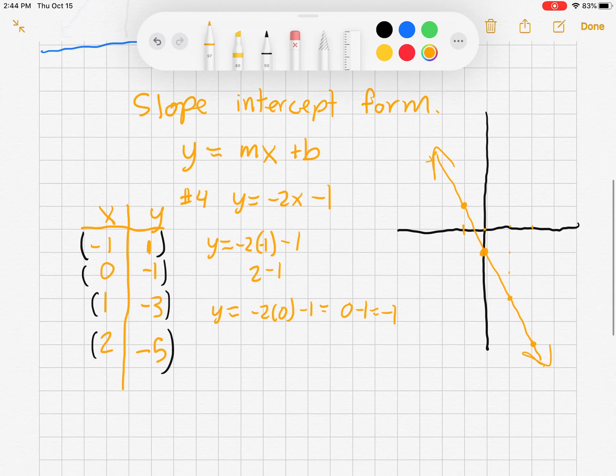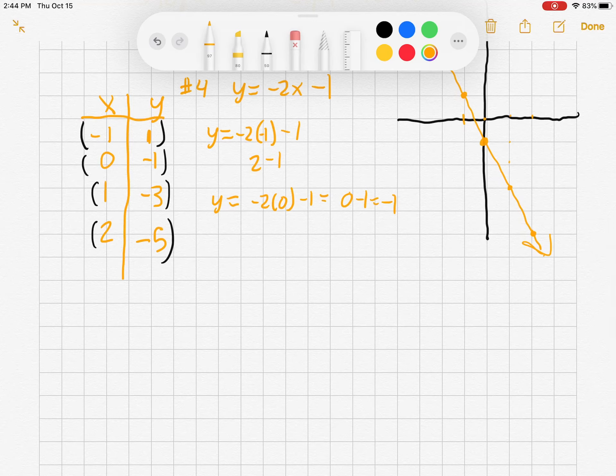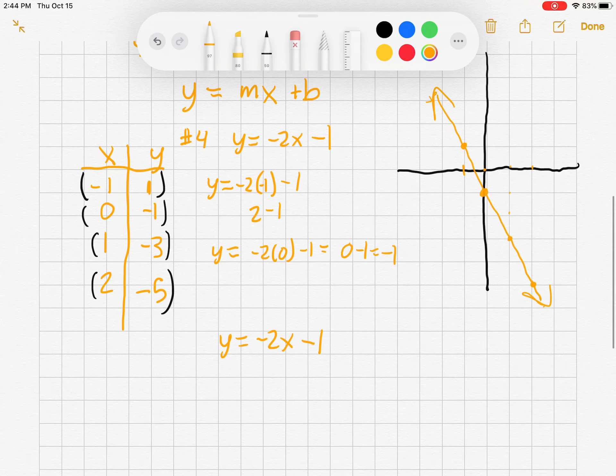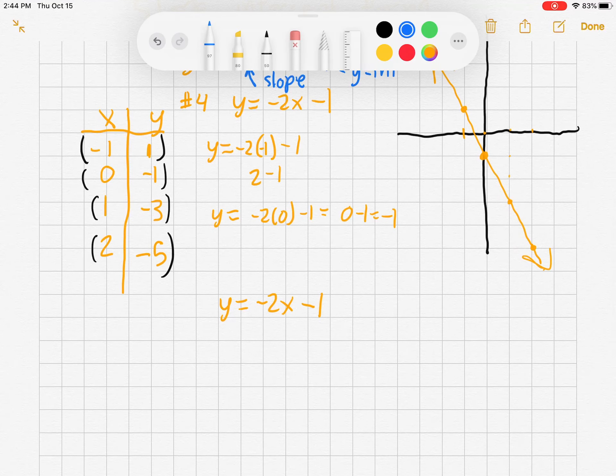That's one way to do it. Let's talk about the other way. So we have y equals negative 2x minus 1. When we talk y equals mx plus b, note that the b represents the y-intercept and the m is the slope, or the steepness of the line. So we can recognize this as our y-intercept and this as our slope.